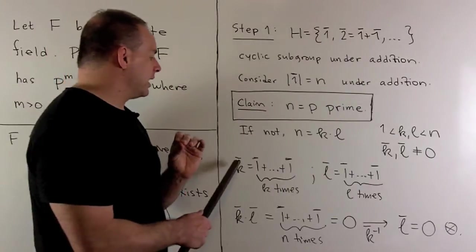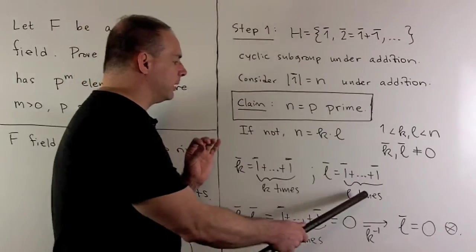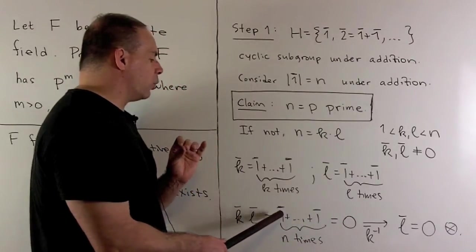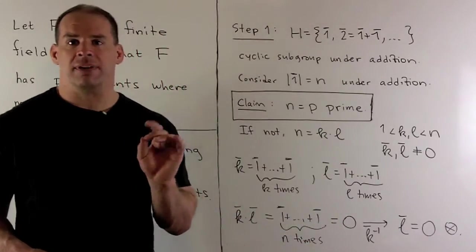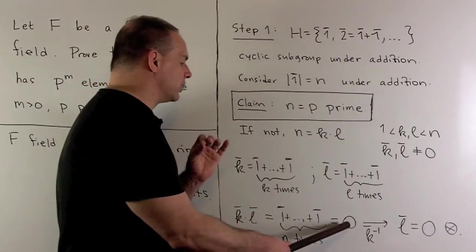Now, if I take k bar times l bar, what are we going to get? If you do your bookkeeping here, we're just going to get that we're taking one bar, adding it to itself n times. So, we're going to get zero.